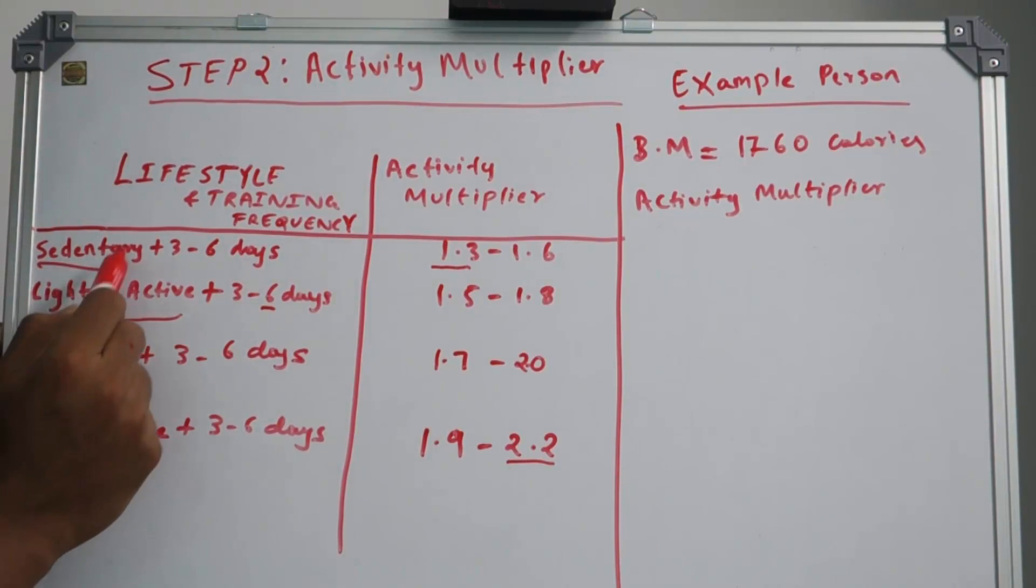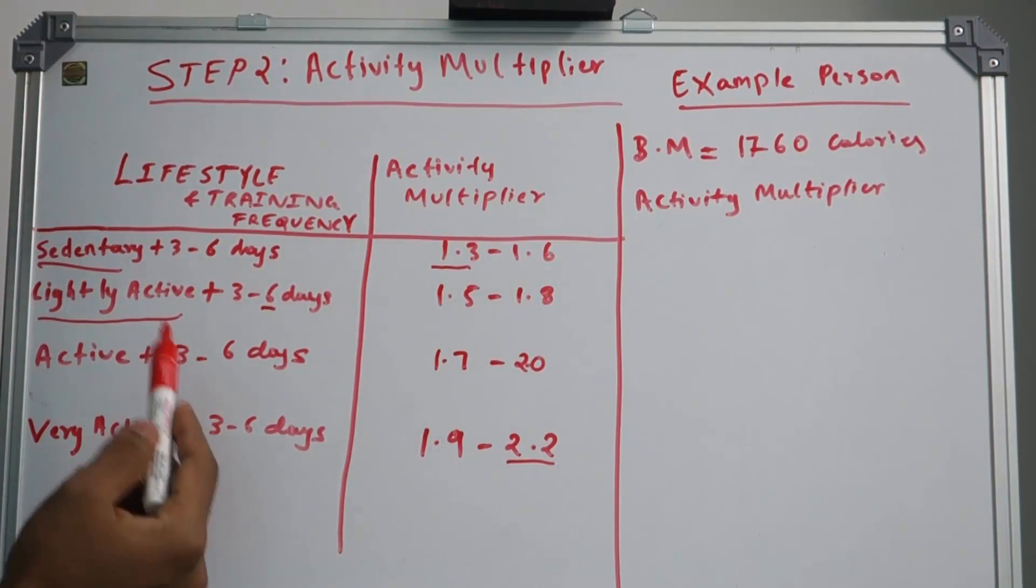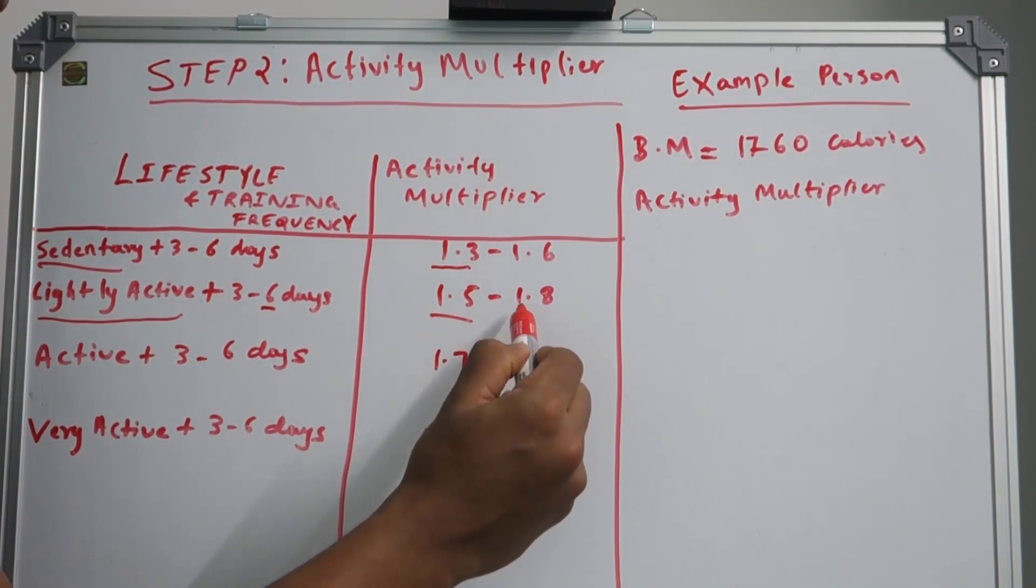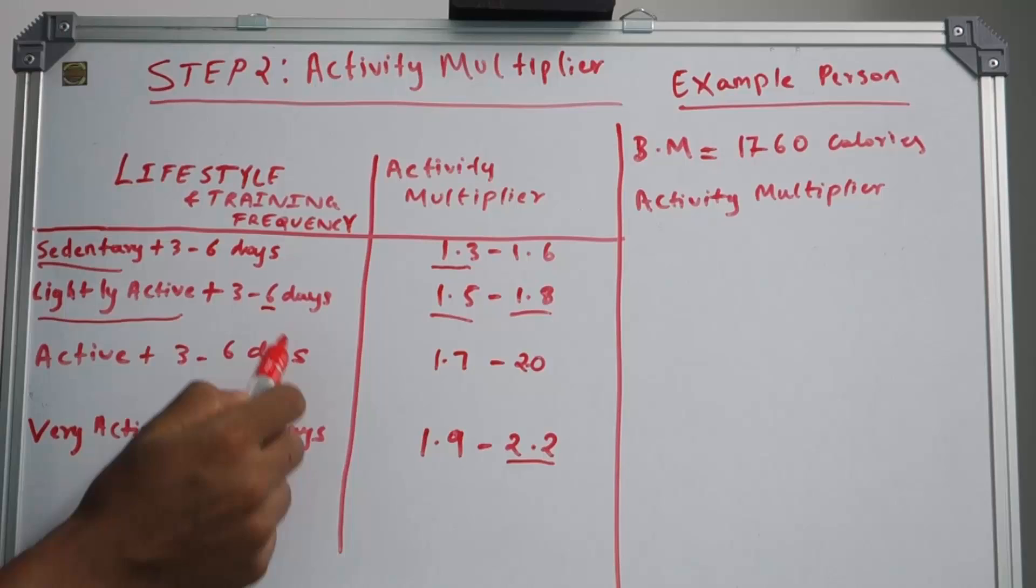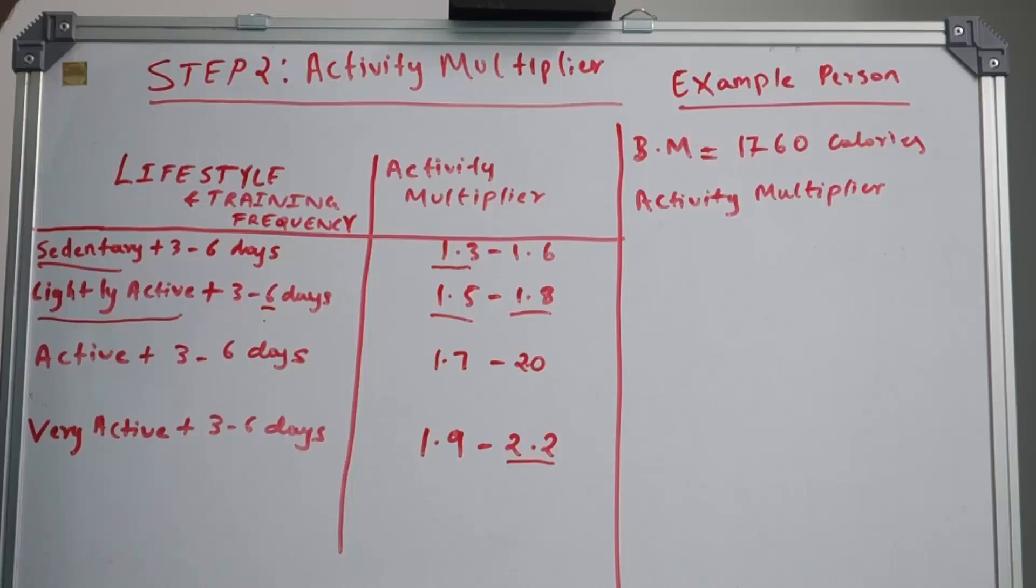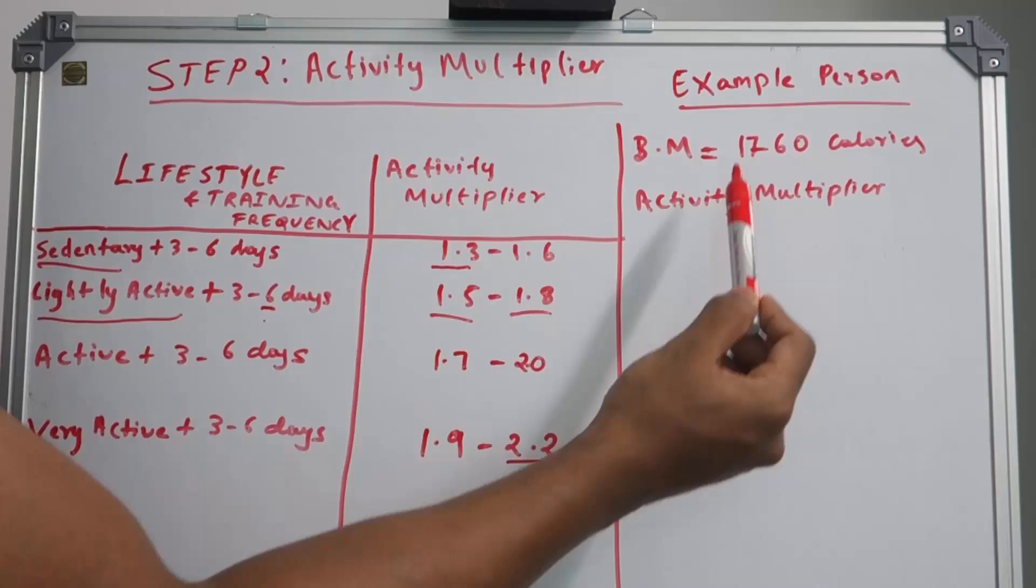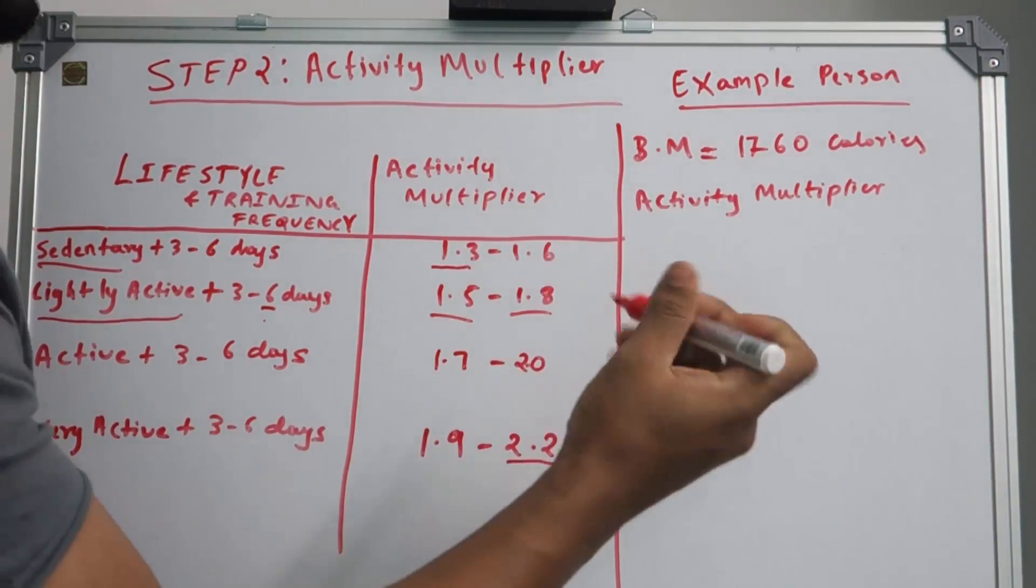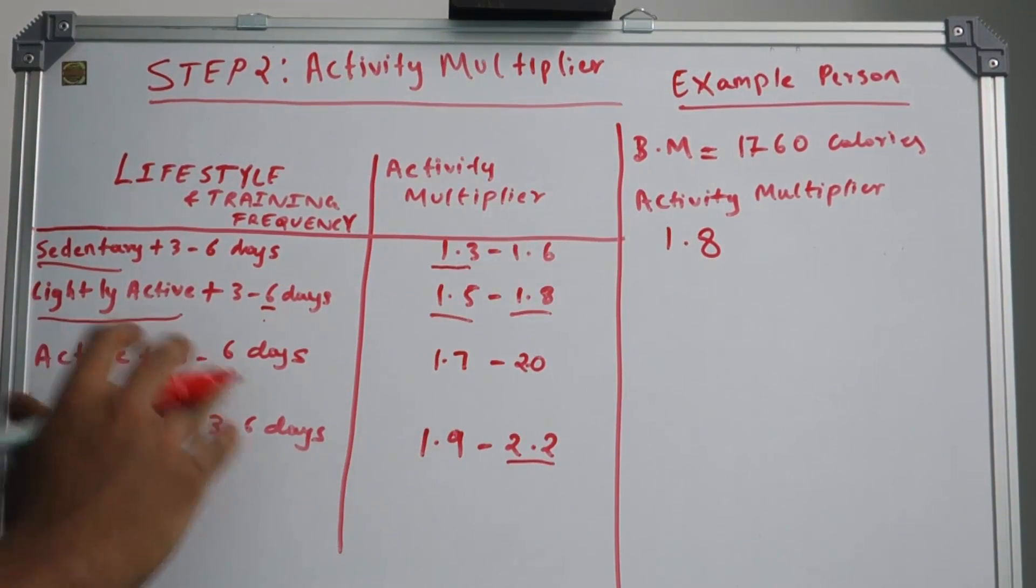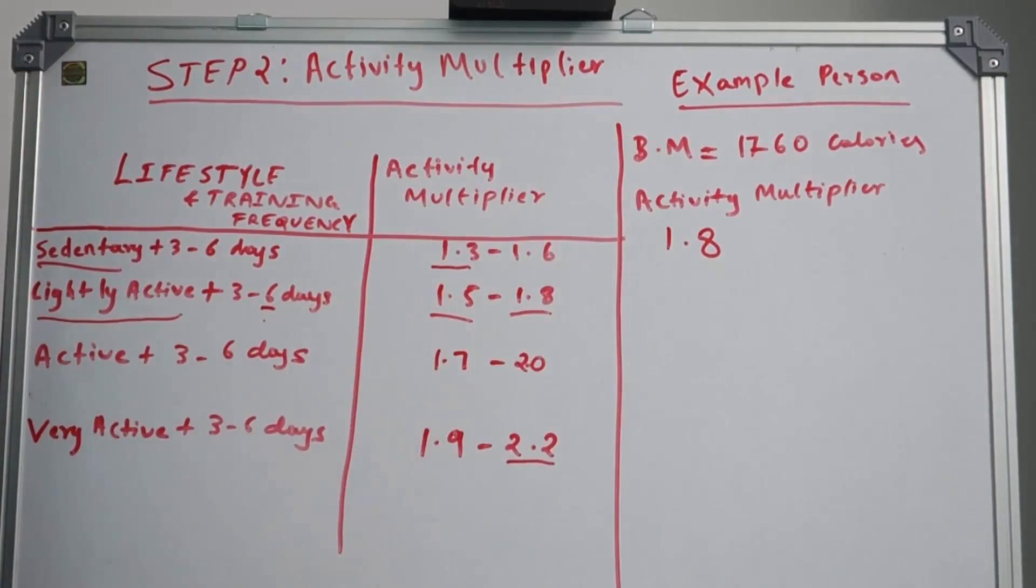Lightly active 3 to 6 days a week is 1.5 to 1.8. Since I train 6 days a week, my activity multiplier will be 1.8. In the last step we calculated our baseline multiplier—that is 1760 calories. Activity multiplier is 1.8, so that's done.